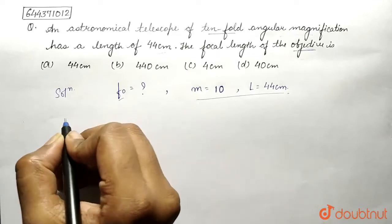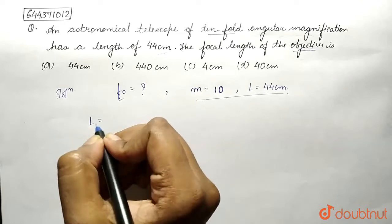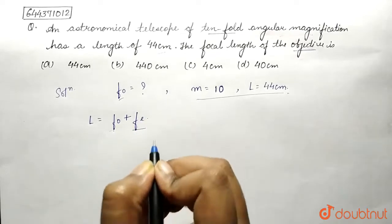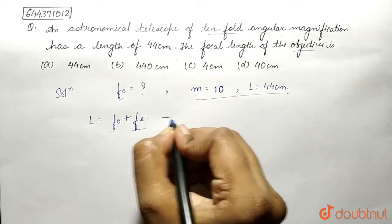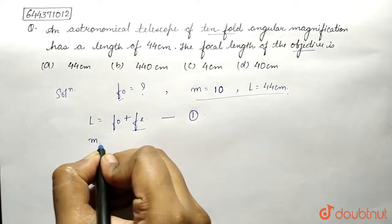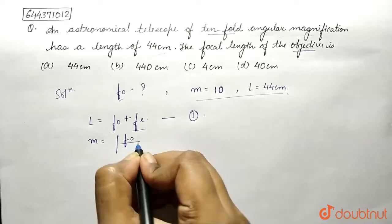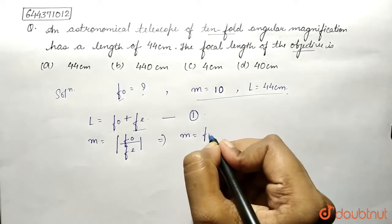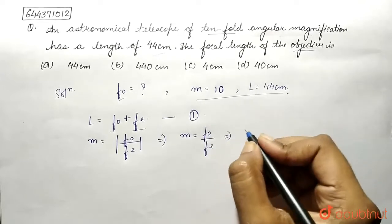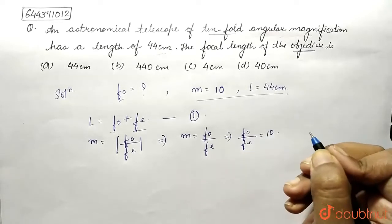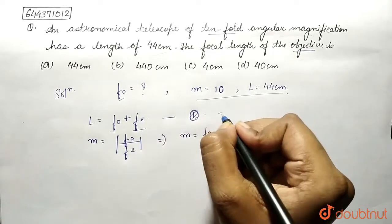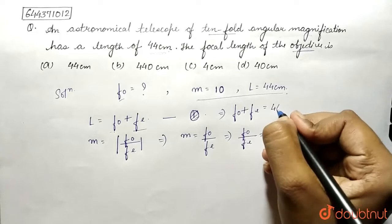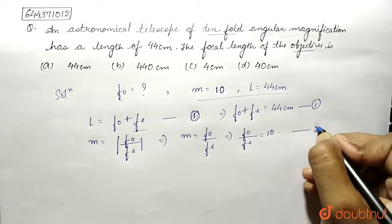We will use two equations to find the focal length. First, the length of the telescope is given by fo plus fe — the focal length of the objective plus focal length of the eyepiece. This is equation one. Second, the magnification of the telescope is given by fo upon fe, so magnification equals 10 means fo upon fe equals 10. And fo plus fe equals 44 centimeters — equation two.